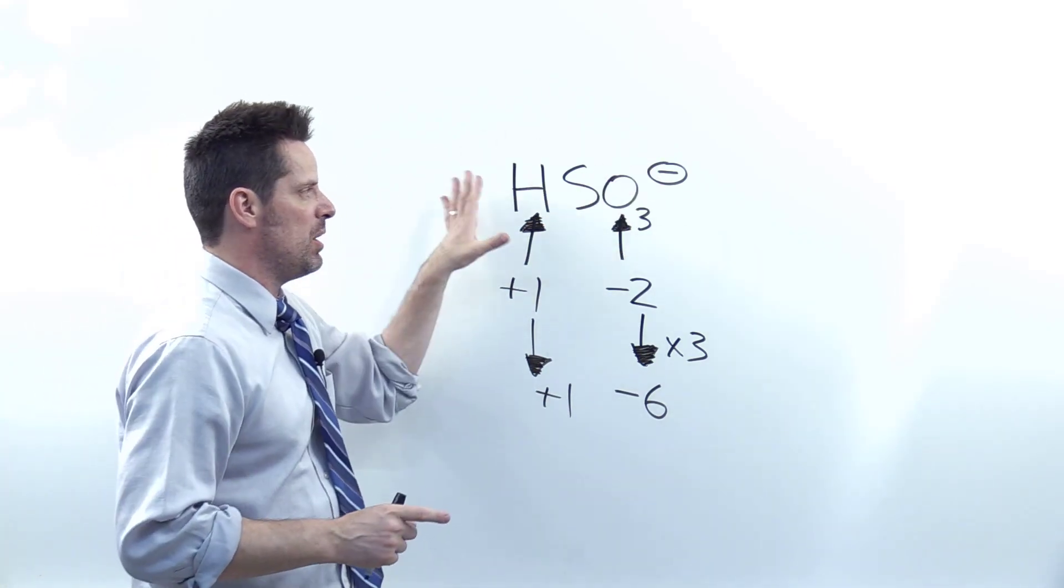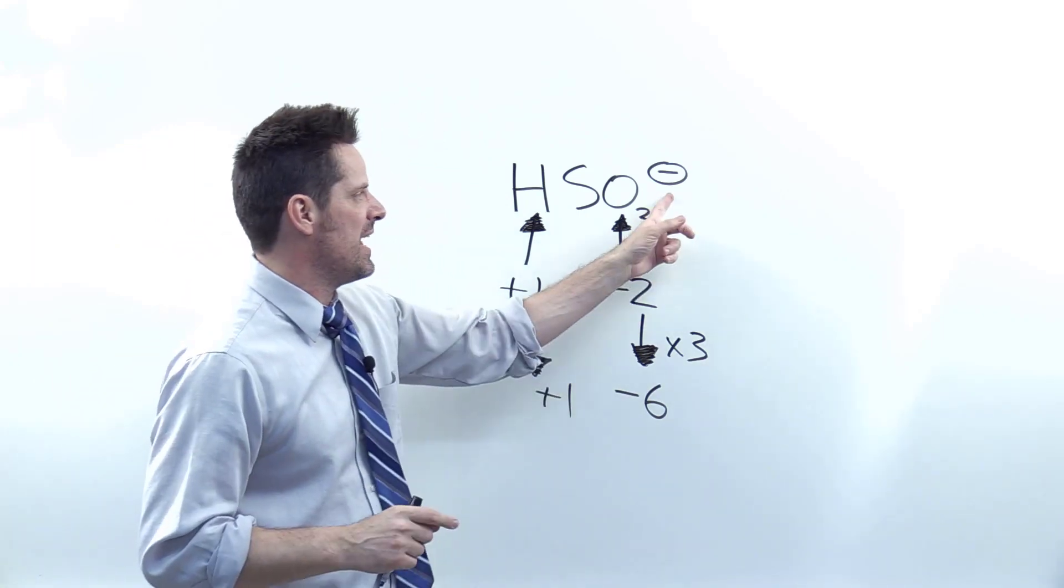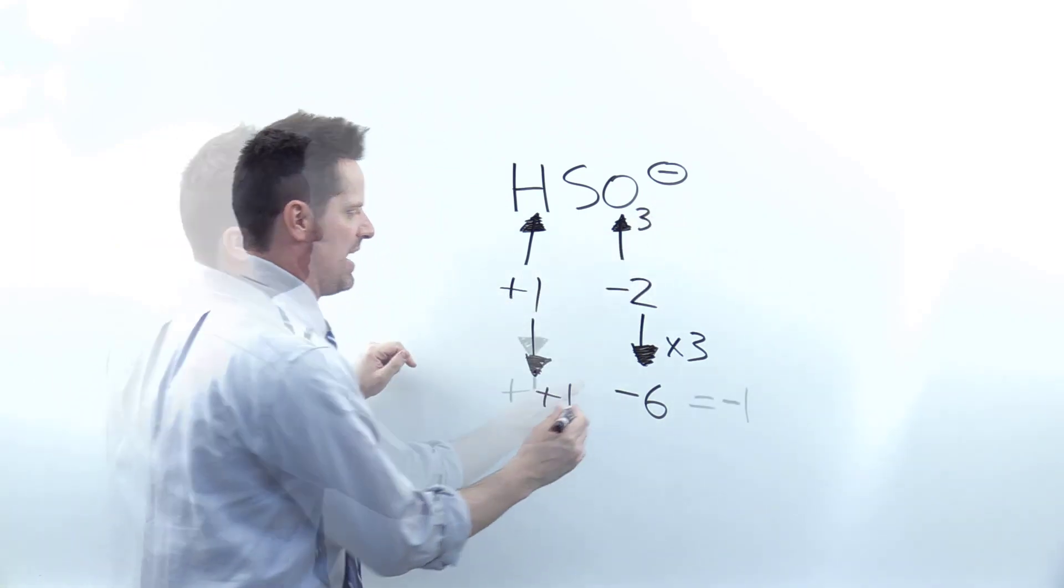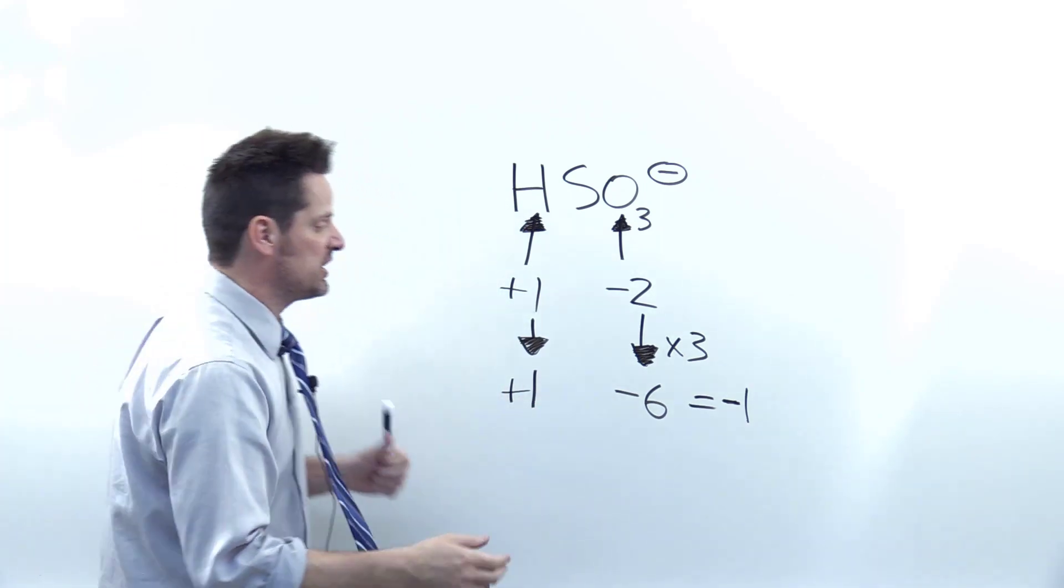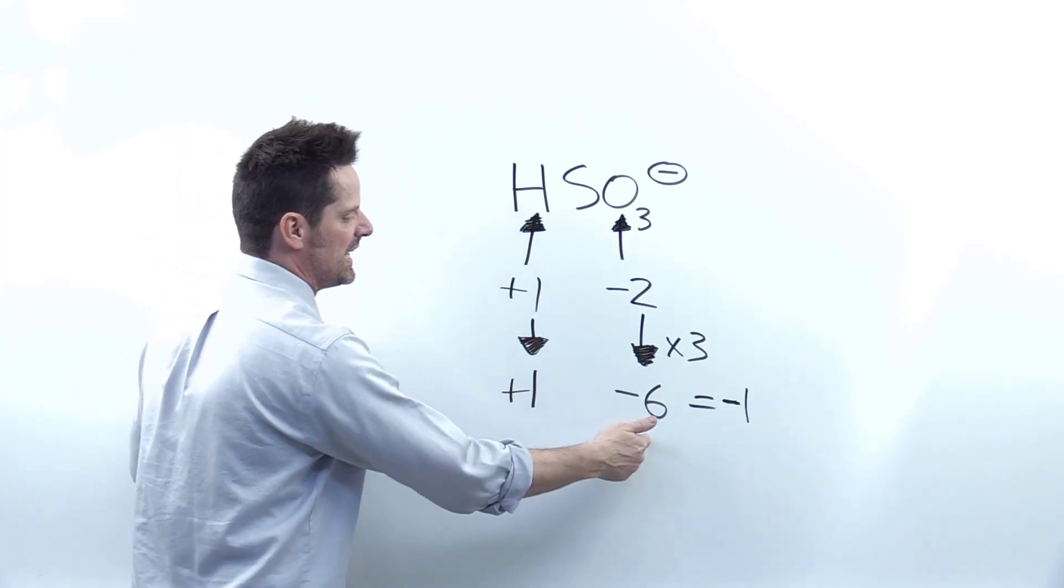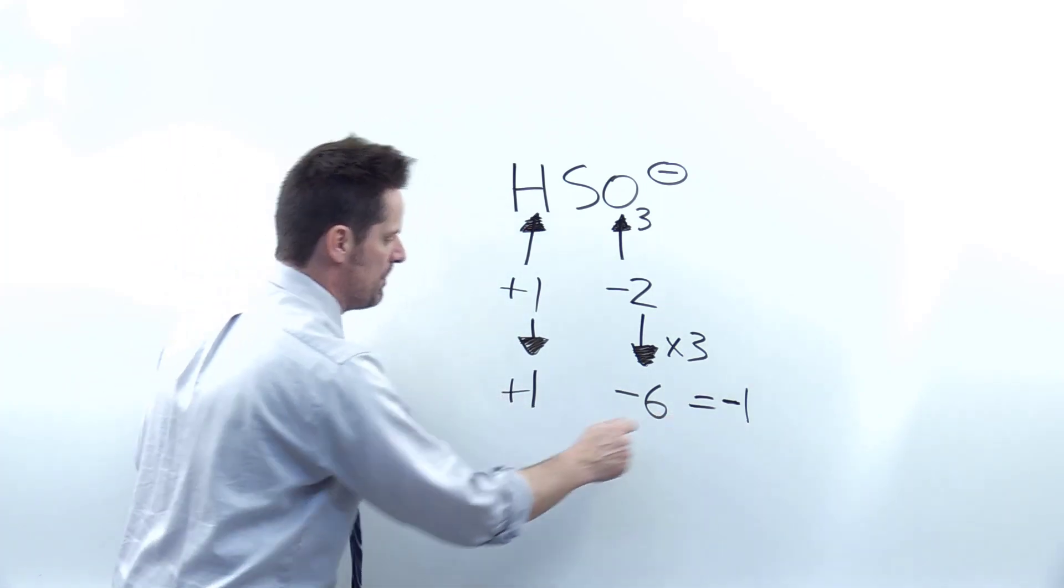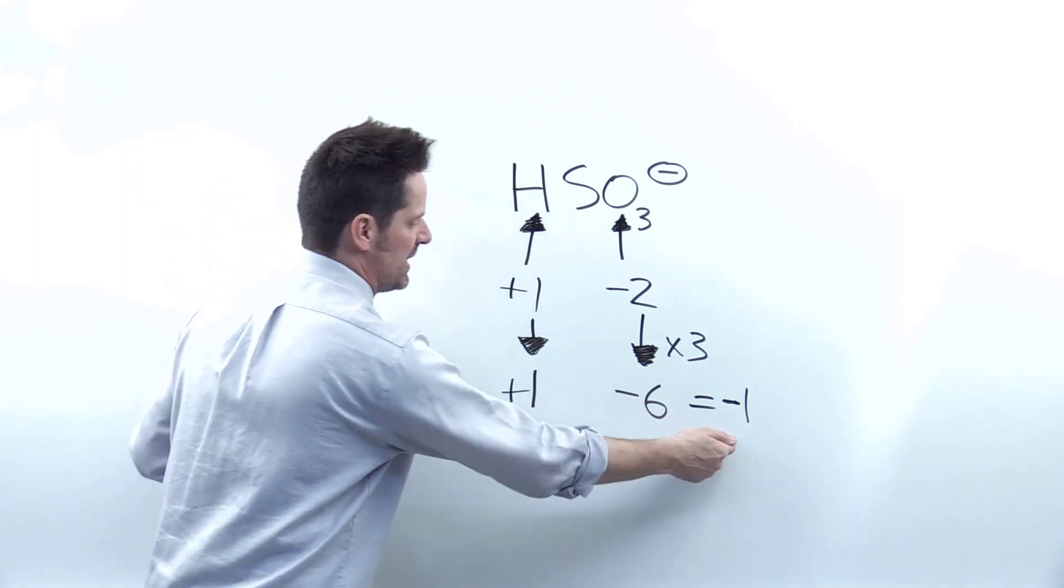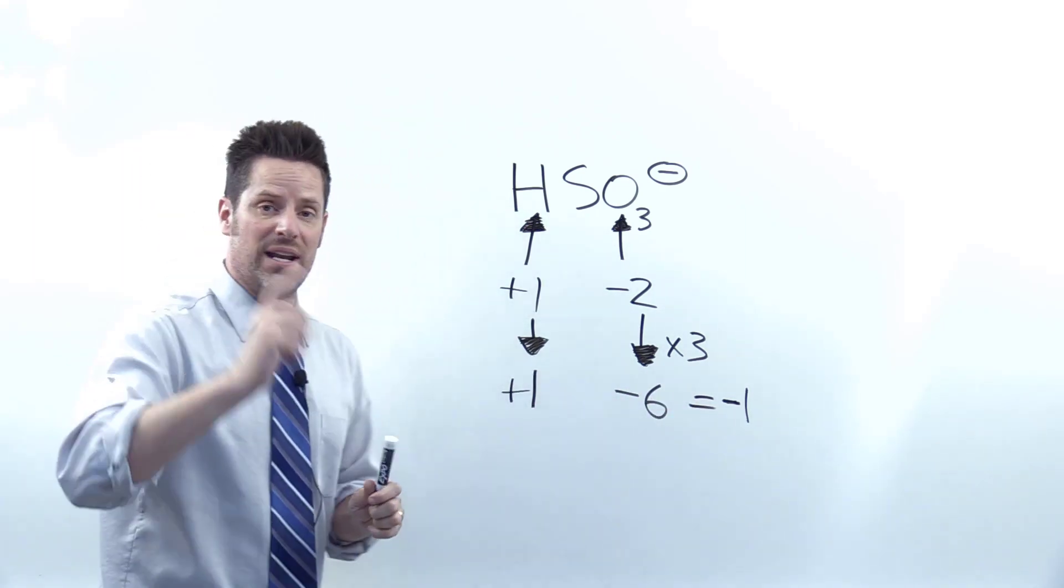Now, is there a charge for this entire molecule? The answer is yes. It is an ion and it has a negative one charge indicated right there. So whatever number I put here for the sulfur, it has to be a number such that when added together with a plus one and negative six, leaves behind negative one. Something plus one minus six equals negative one. What is that something?